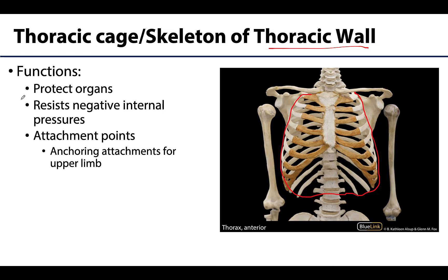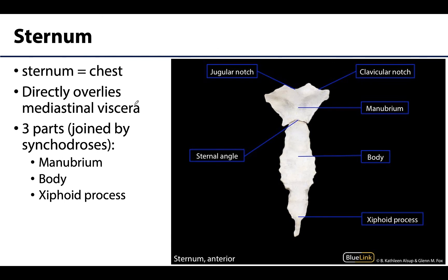The thoracic cage is also an important attachment site for muscles of the abdomen, the neck, the back, and muscles of respiration. It provides the anchoring attachment — the origin or non-moving attachment — of many muscles that move or maintain the position of the upper limbs, such as the pectoralis major, whose muscle belly is located here but whose primary actions are associated with the shoulder joint.